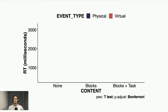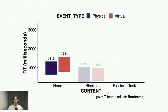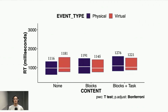Our second experiment controls for the visibility of physical LEDs on participants' peripheral vision by presenting all content within a web application window. Our results indicate that event type does not have a significant effect on participant reaction times for all conditions — that is, for none, blocks, and blocks plus task. This suggests that peripheral vision did contribute towards quicker reaction times towards the physical LEDs in our first experiment.